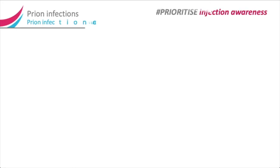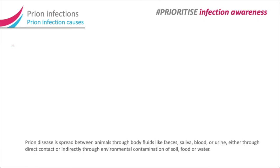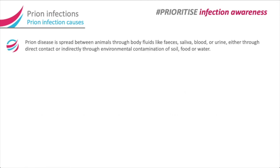Prion infection causes. Prion disease is spread between animals through body fluids like feces, saliva, blood, or urine — either through direct contact or indirectly through environmental contamination of soil, food, or water.